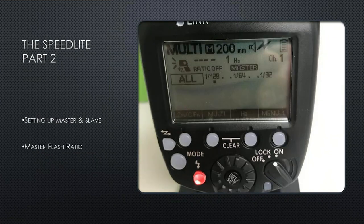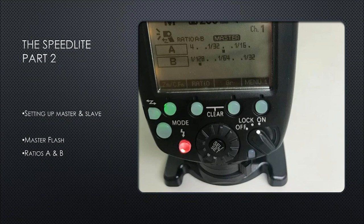On the four buttons, the left-hand button says ZM/C.FN — ZM is zoom. By pressing that, it allows us to change manually the zoom facility. So as far as when it's either a slave or a master, the first thing you need to do as a slave is tell it what group it's in. In this case, the master is telling Group A to do one-third above one-thirty-second power, and it's telling Group B just to fire at one-twenty-eighth power. So it's technically not in a ratio here — it's actually in a manual setting.